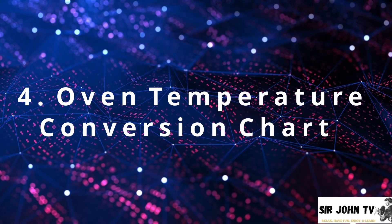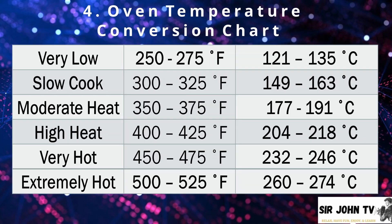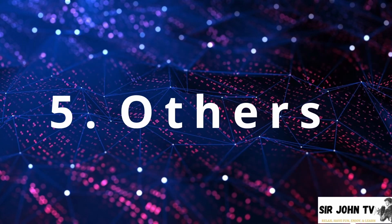For our number four method, oven temperature conversion chart from very low to extremely high. Very low is from 250 to 275 degrees Fahrenheit, 121 degrees to 135 degrees Celsius. For slow cook heat, 300 to 325 degrees Fahrenheit, 149 to 163 degrees Celsius. Moderate heat, 350 to 375 degrees Fahrenheit, and 177 to 191 degrees Celsius. Until extremely hot, we have 500 to 525 degrees Fahrenheit, while 260 to 274 degrees Celsius.